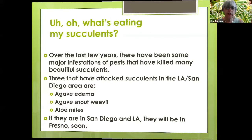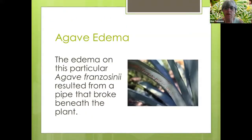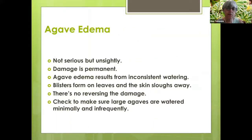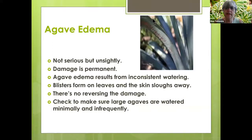The first is agave edema. This agave franzosini resulted from a pipe that broke beneath the plant, and you can see the damage it caused on the leaves. It's serious and unsightly. The damage is permanent and results from inconsistent watering. Blisters form on the leaves and the skin starts to slip away — there's no reversing the damage. Check to make sure large agaves in the ground are watered minimally and infrequently.